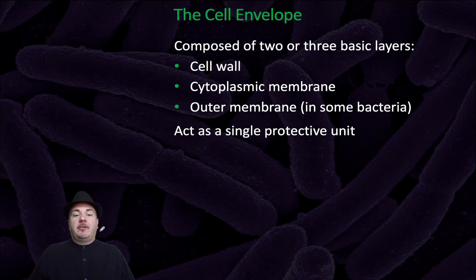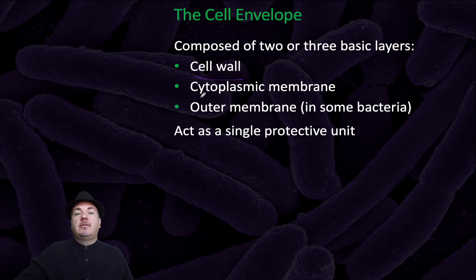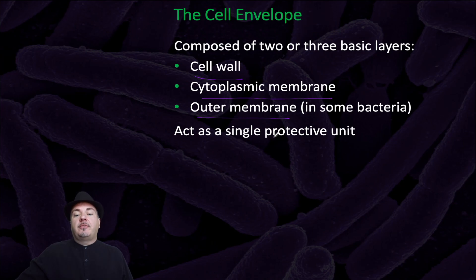In bacteria, the cell envelope is composed of two or three basic layers: the cell wall, the cytoplasmic membrane, and in some bacteria, the outer membrane. These together act as a single protective unit for the bacteria cells.